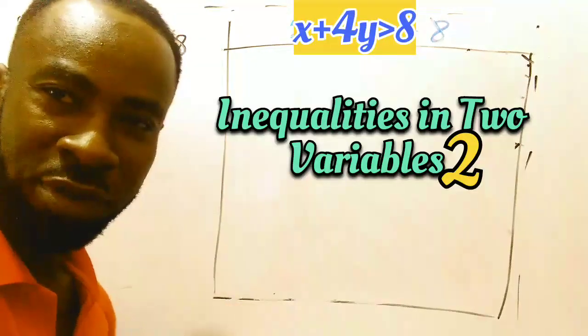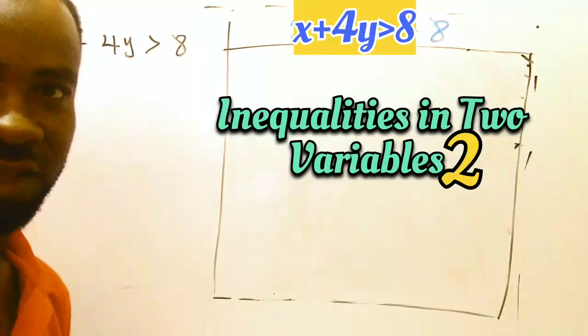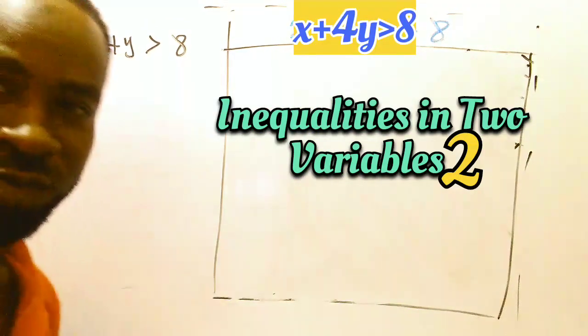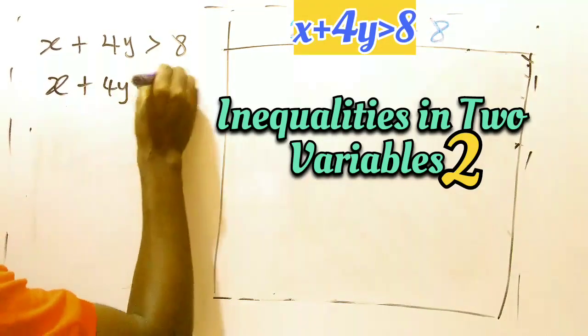So let's look at how to plot this on an equation plane. We are given x plus 4y greater than 8. Now the first thing to do as usual is to rewrite this in equation form.